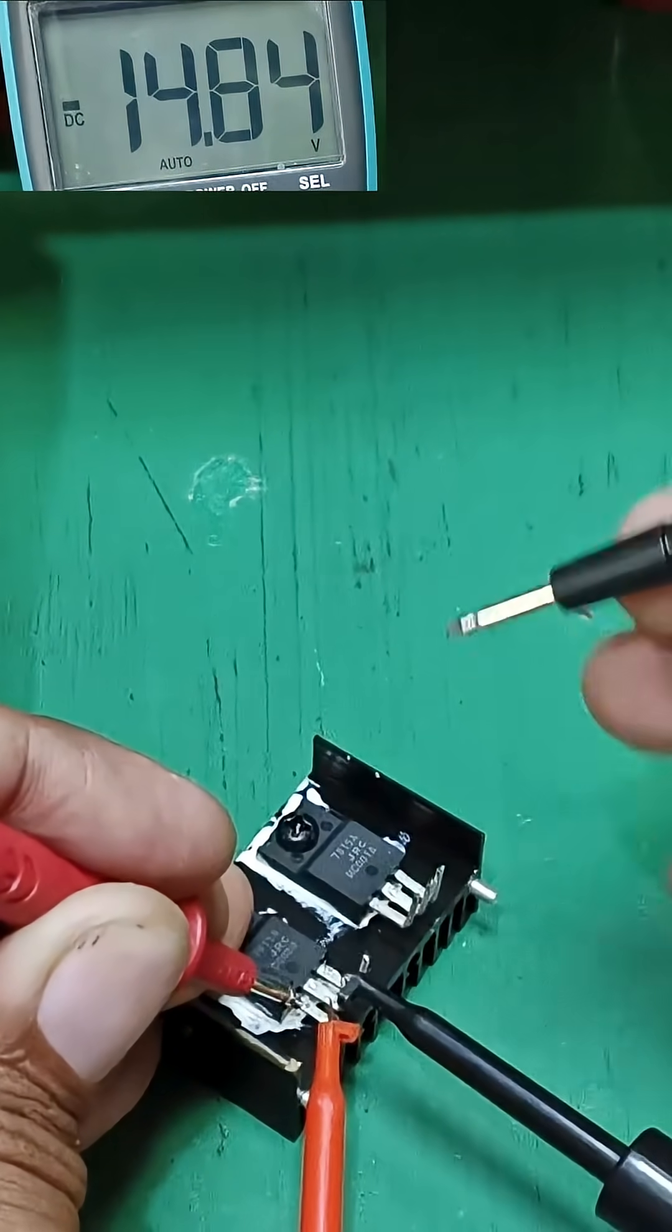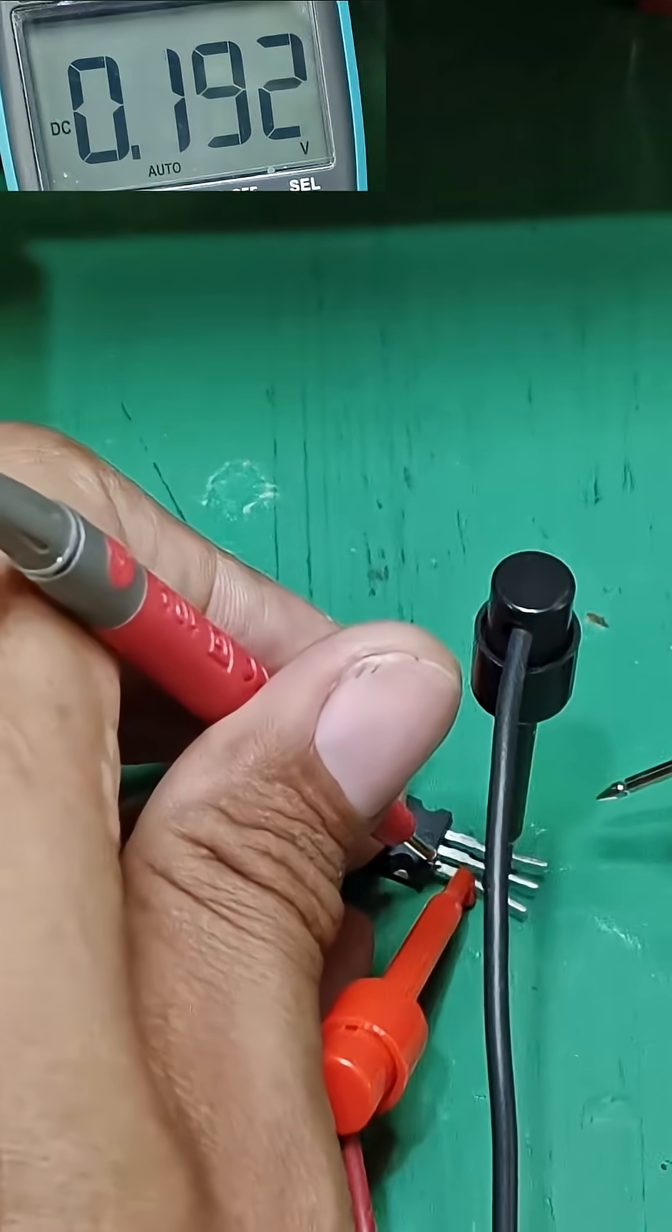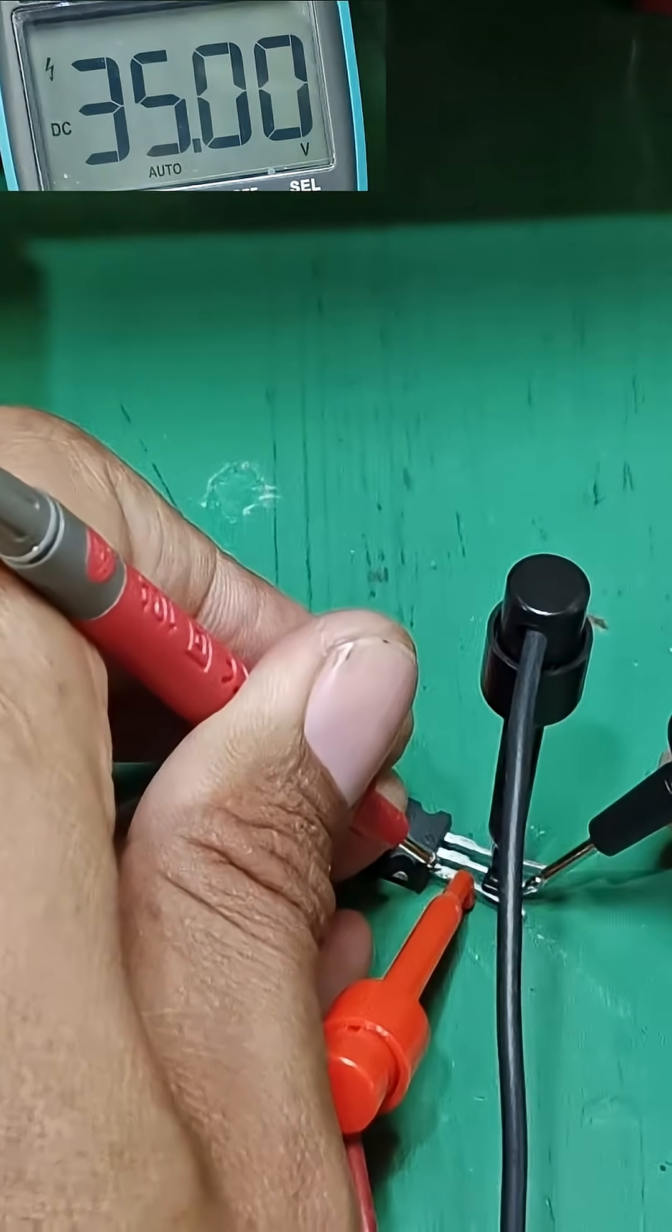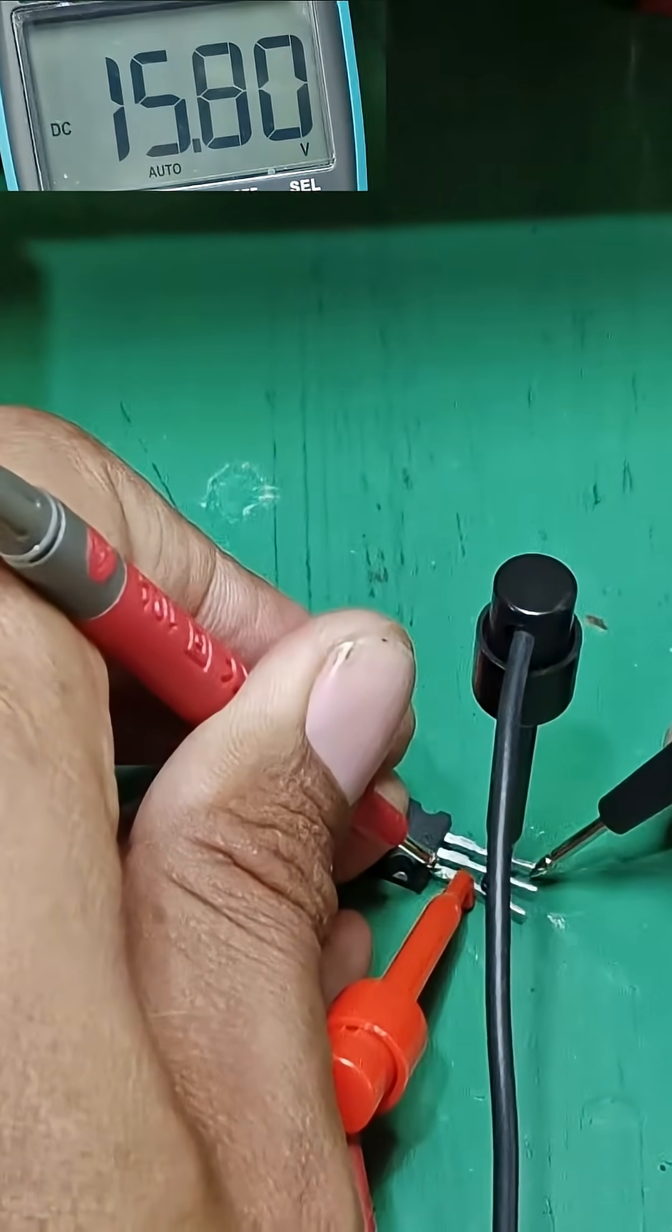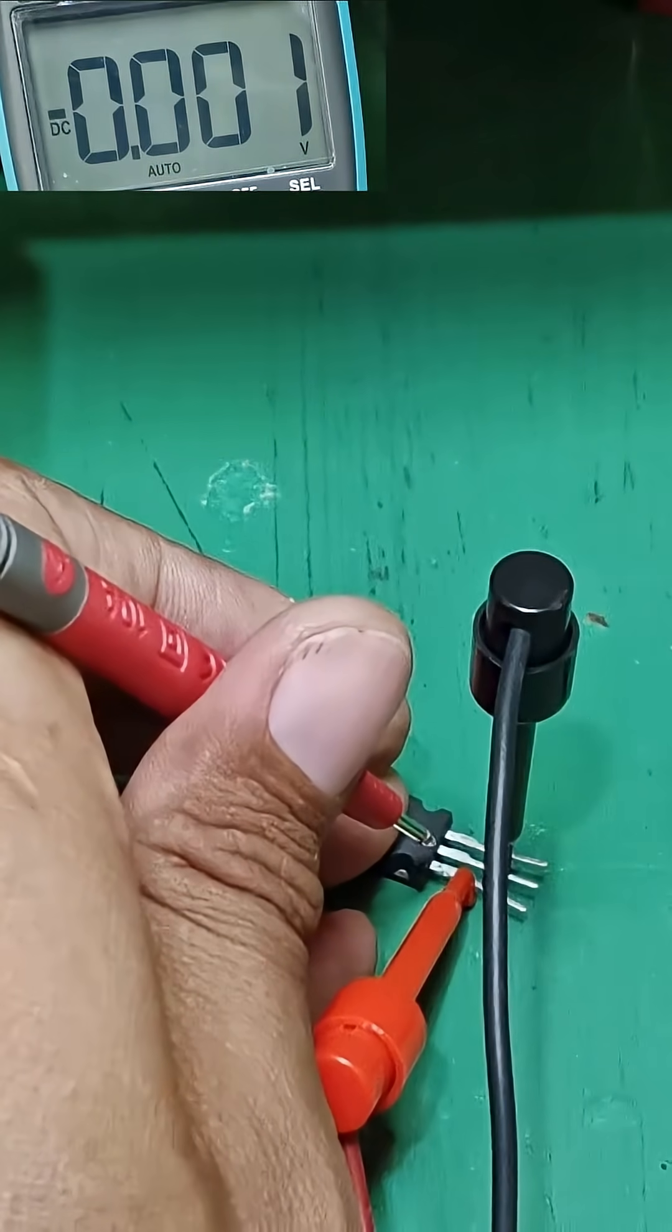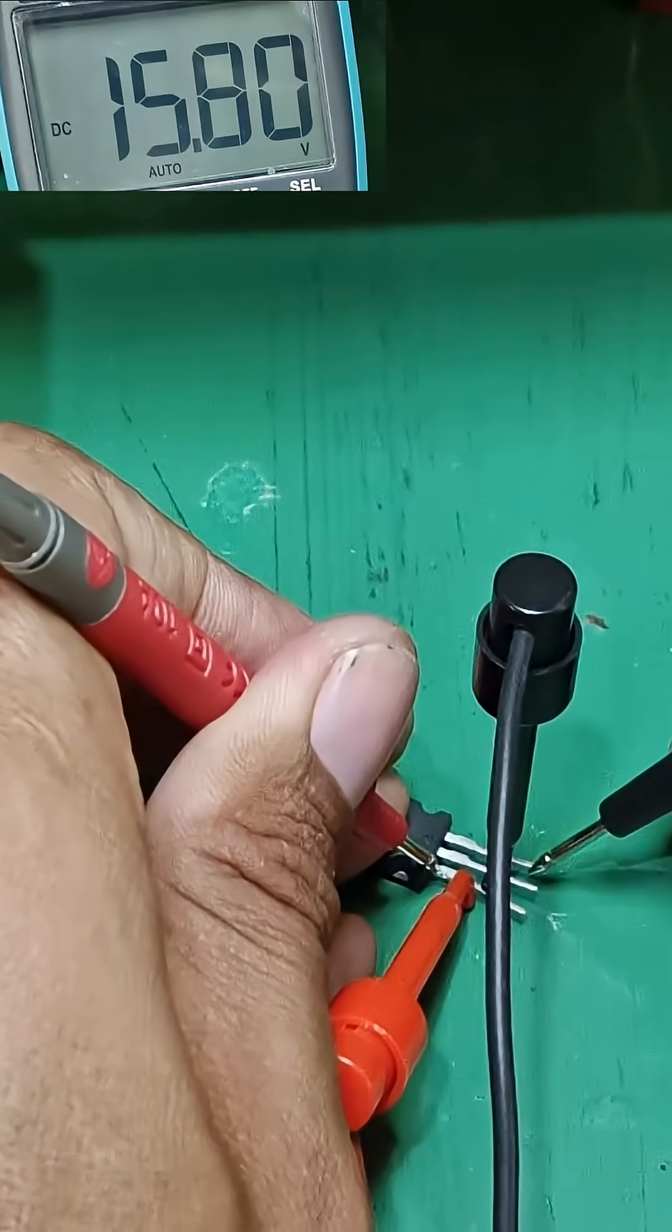Now let's compare my new regulator IC, this is 7915. My input 34.9 or 35 volts, my output 15 volts. My busted 7915 output voltage 35 volts, so not regulated. But now I have 15 volts output.